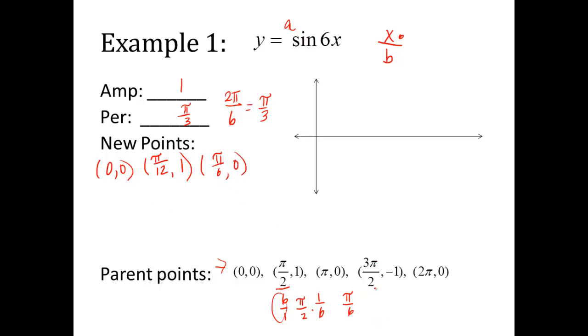Next point. Look, 3 pi over 2 divided by 6 over 1. This is going to be a keep it, change it, flip it. So 3 pi over 2, change to multiplication, flip this over. When I multiply, I get 3 pi over 12. Well, that reduces to pi over 4. So my new x value is pi over 4. The y value is not changed in this scenario. It's still negative 1. Lastly, is 2 pi. 2 pi divided by 6, we already talked about this. That is pi over 3. So it's pi over 3. Now, on these, you're not going to plot the parent function. You're just going to plot the new points that you have.